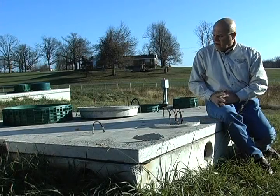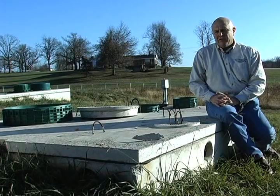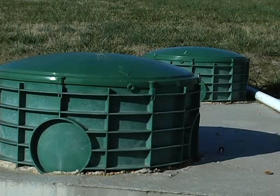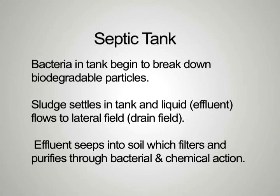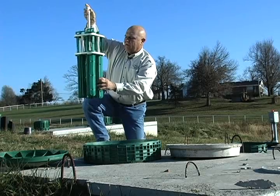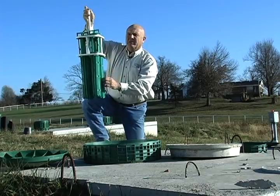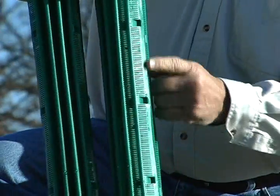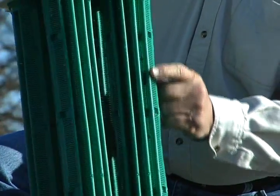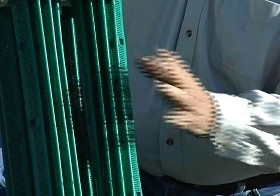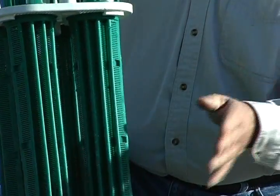The function of a septic tank is to separate the particles in wastewater that will settle or that will float. You can see what we have is little fine slots that keep the solids from passing out with the effluent, because what you want is as clear a water leaving this going out into your lateral field as you can possibly get.